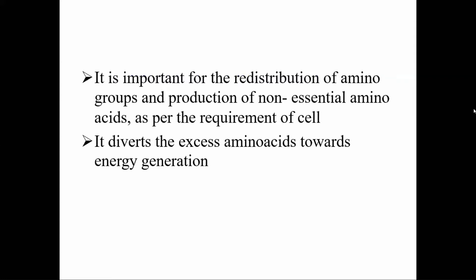Transamination is majorly important for redistribution of amino groups and production of non-essential amino acids as per the requirement of the cell. For example, if more cysteine is needed for protein synthesis, it can be synthesized by transamination. It can also divert excess amino acids toward energy generation — the most common acceptor for amino groups from amino acids is alpha-ketoglutarate, which is converted to glutamate. From glutamate, by oxidative deamination, ammonia is liberated and alpha-ketoglutarate is regenerated, which can enter the TCA cycle for energy generation.